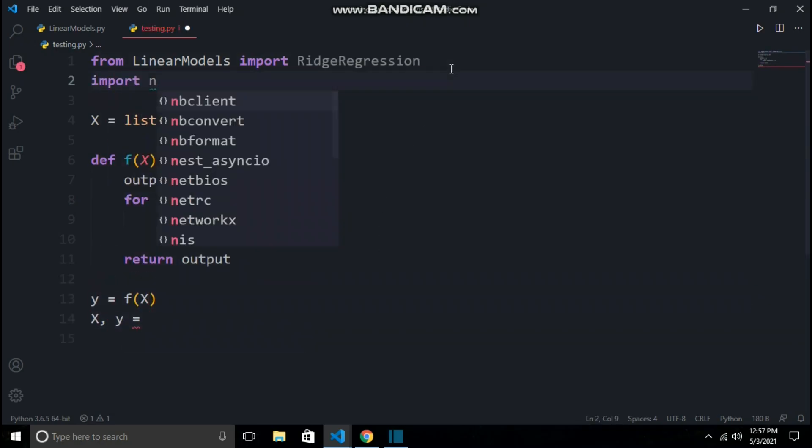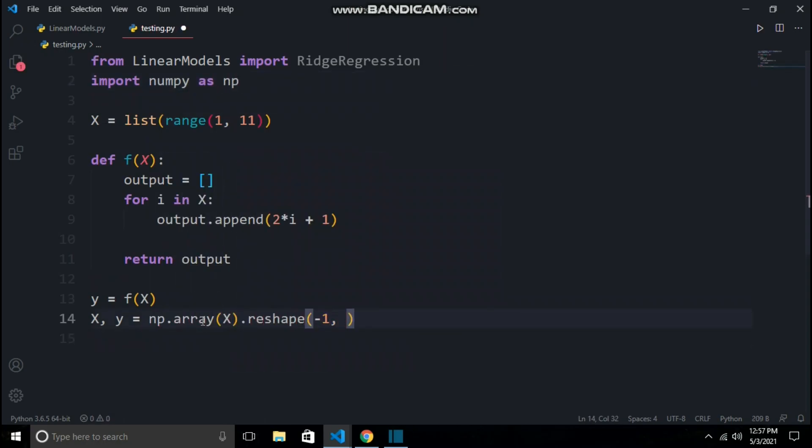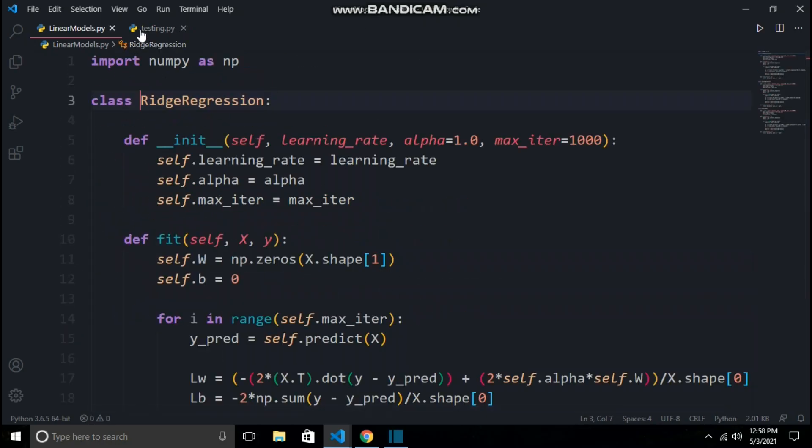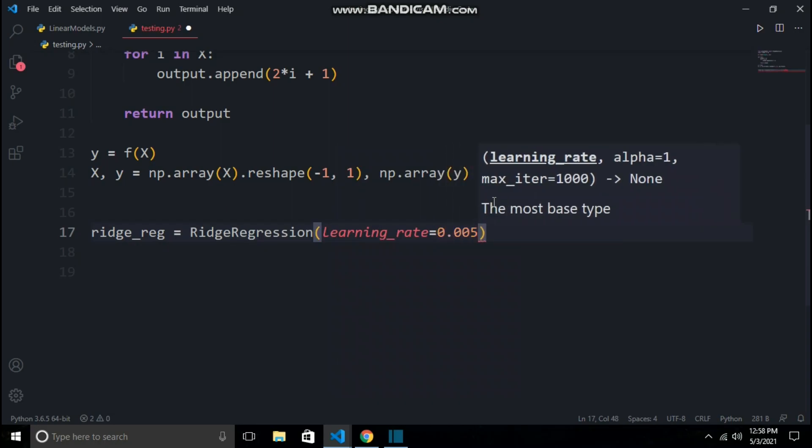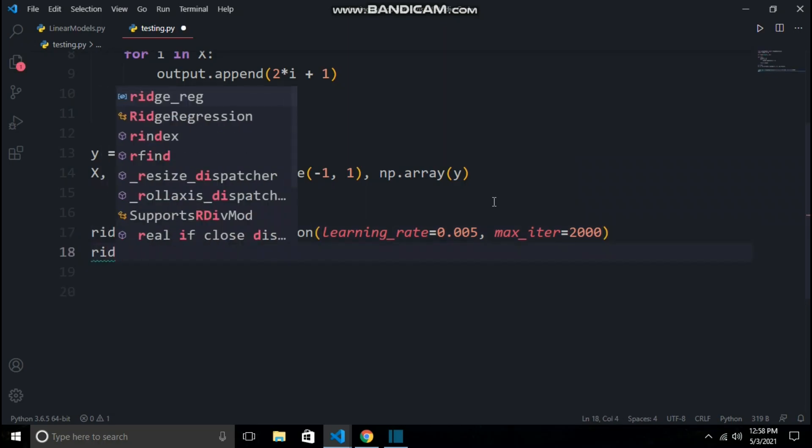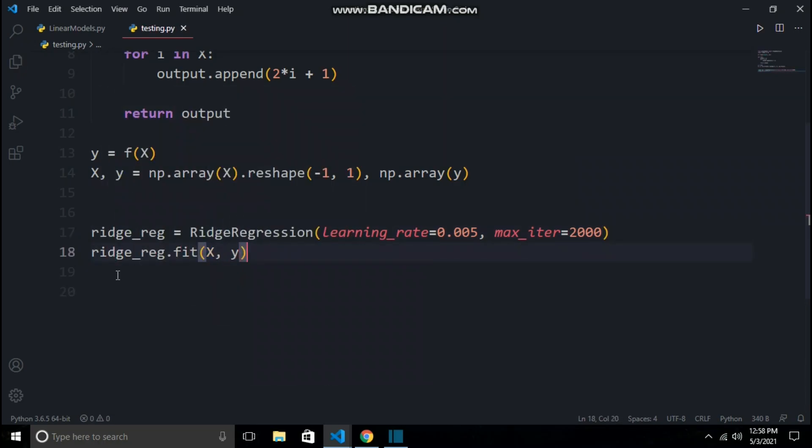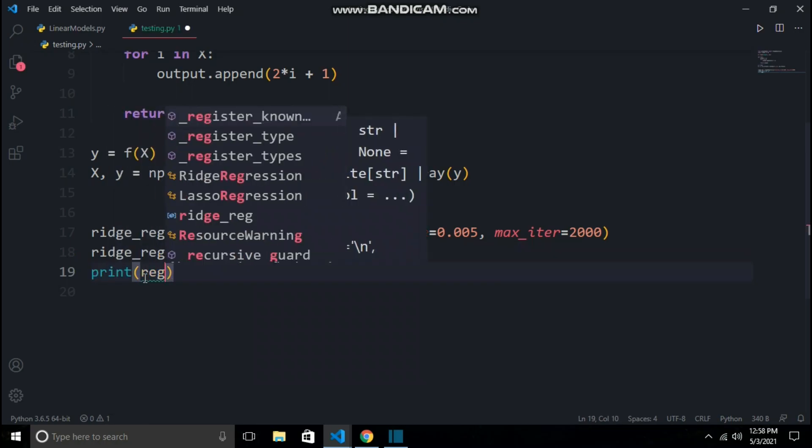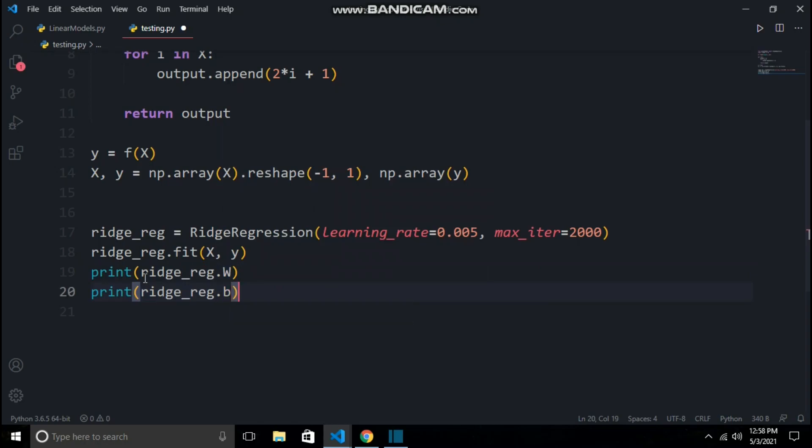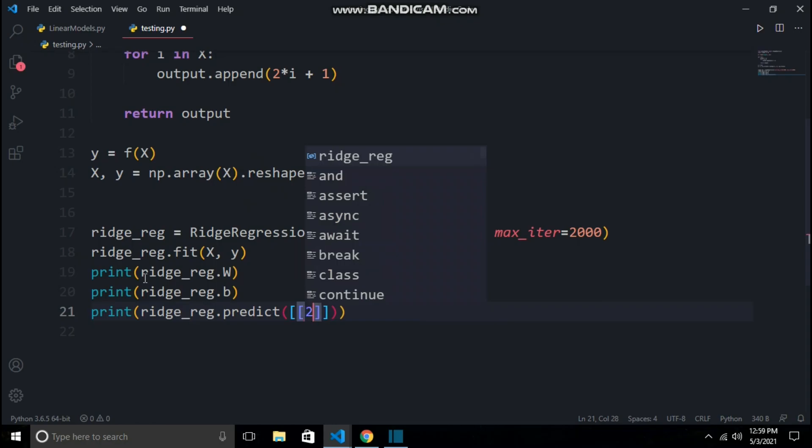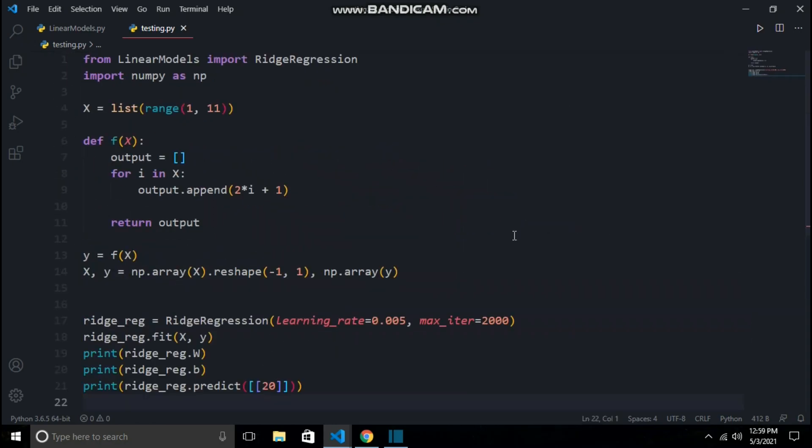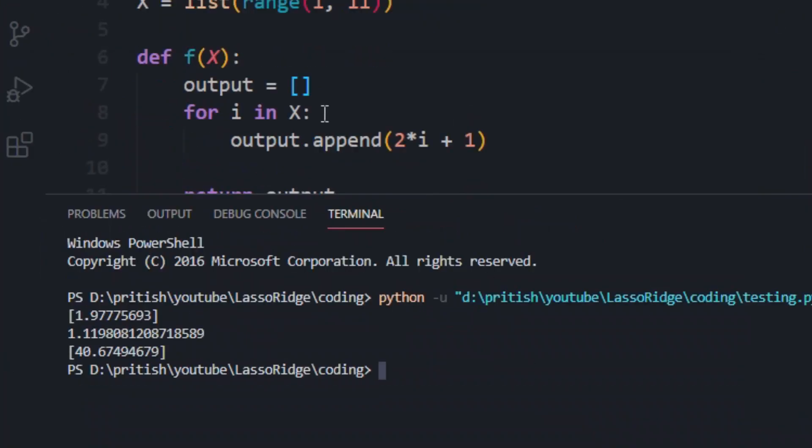We will convert the values of x and y from a normal Python list to a numpy array. Let us call our ridge class and here we will set the learning rate as 0.05 and max_iter to be 2000. Then we will fit our x and y values, and after the model is trained we will print the final weights and bias values calculated by our model. Also we will ask our model to predict what will be the y value if x value is 20. Let's run the code. Our model has evaluated weights as 1.977, bias to be 1.119, and predicted y value is 40.67.